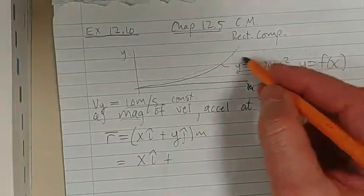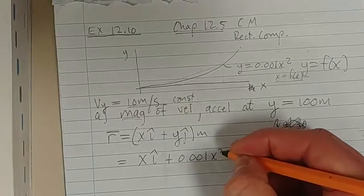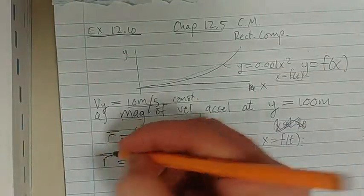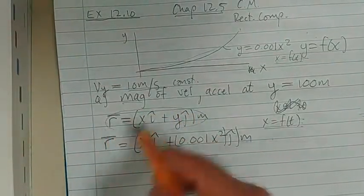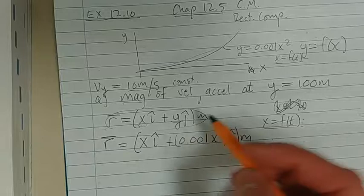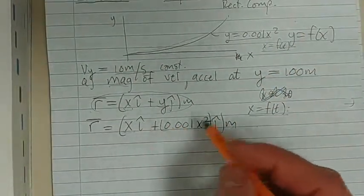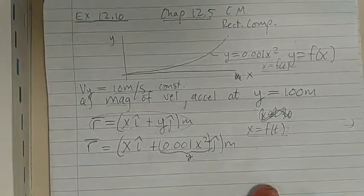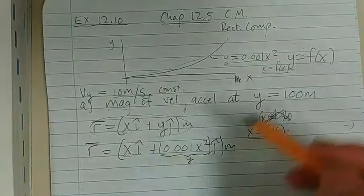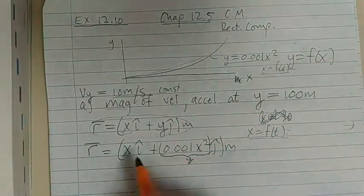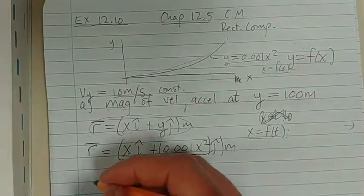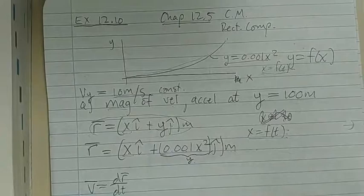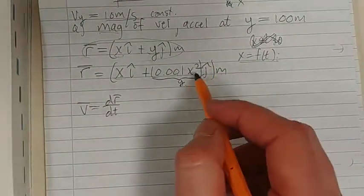So if we write out our position vector — I always like to start with this — it's xi plus yj meters. We don't have explicit information on x; we just know it's x, a function of time. And y is 0.001x squared, so the position vector is xi plus 0.001x² j meters. If we did have x as a function of time, we'd just plug it in and take the derivative easily. But the problem now is we do not have t.